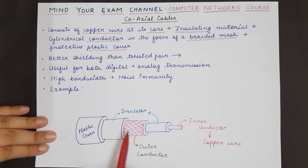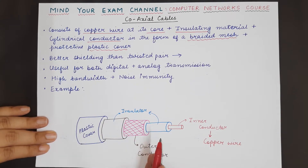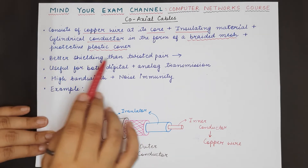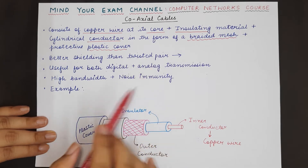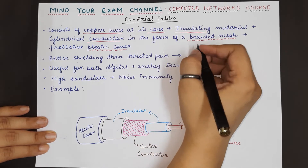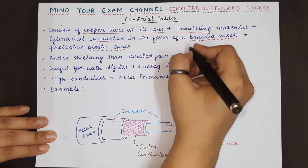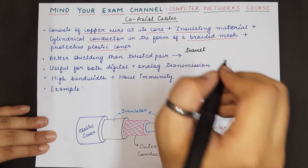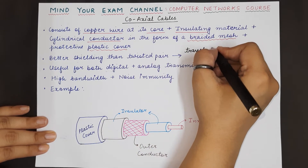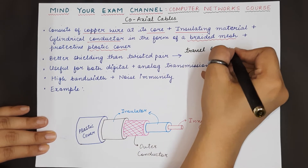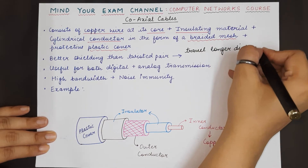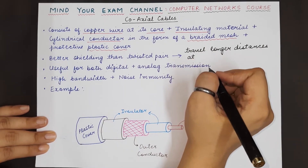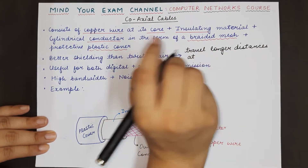Due to its multiple coverings and protections in the form of insulation and metal sheath, it has better shielding than twisted pair. That is why the signal that travels inside a coaxial cable can travel longer distances at higher speeds. This is a key advantage that coaxial cable offers over twisted pair cable.